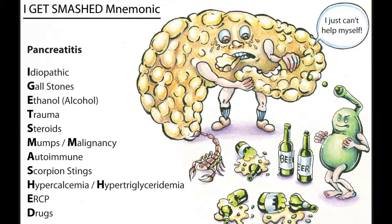S is for scorpion stings. H is for hypercalcemia and hypertriglyceridemia. In order to have pancreatitis from hypertriglyceridemia, the triglyceride levels tend to need to be greater than a thousand.